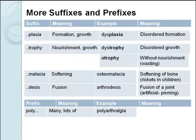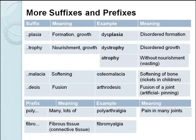Prefixes: poly means many or lots of. Our word example is polyarthralgia — poly means many, arthra is joint, and algia is pain, so it means pain in many joints. Fibro relates to fibrous or connective tissue, which includes cartilage, ligaments, and tendons. So fibromyalgia: fibro is the connective or fibrous tissue, myo is muscle, and algia is pain — so fibromyalgia means pain in muscle and fibrous tissue.